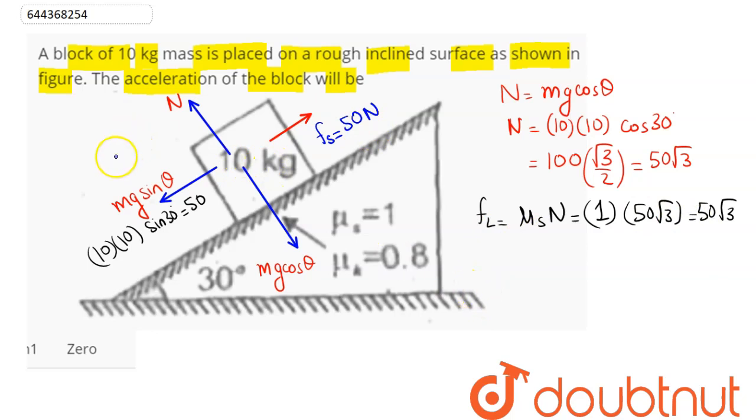Hence acceleration will be equal to 0 of the block as net force is 0 - 50 Newton downwards, 50 Newton upwards being balanced. Hence acceleration of the block will be 0 which is option number 1. So 1 is the correct answer.